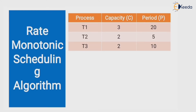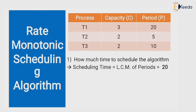Now let's explain the rate monotonic algorithm with one example. We have three processes: T1, T2, and T3, with capacity C respectively 3, 2, 2 and period P of 20, 5, and 10. The scheduling time is calculated using the LCM of the periods — LCM of 20, 5, and 10 — which equals 20. So the total scheduling time is 20.